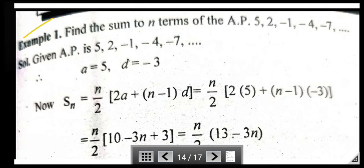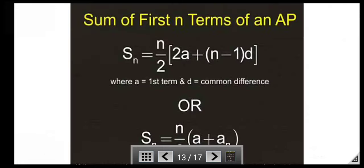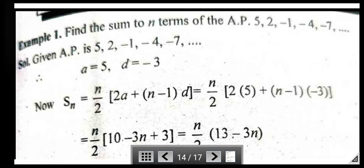Let us solve examples based on the sum of n terms of A.P. First example: Find the sum of n terms of the A.P. 5, 2, −1, −4, −7, ... Here a = 5 and d = −3. Using S_n = n/2 × [2a + (n − 1)d] and putting a = 5 and d = −3, we get S_n = n/2 × (13 − 3n).